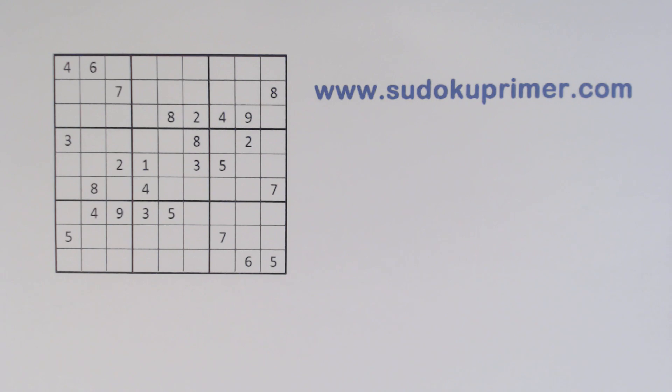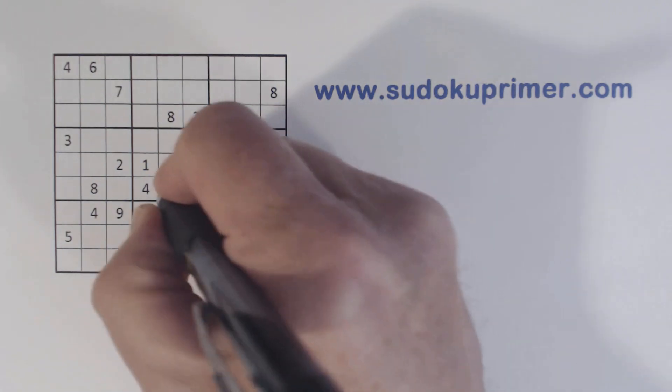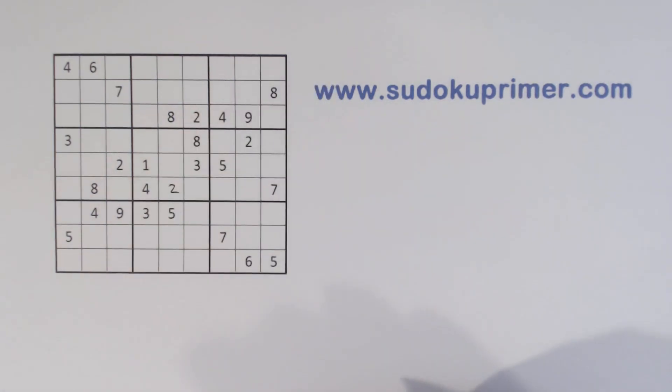This puzzle was kind of fun to do. We're gonna have to use some techniques like double row elimination, twins and triplets, and a few others in order to solve it. So let's get going on it. As I've mentioned before, if you have any questions about how I got a certain number or any questions at all, please leave a comment and I'll try and answer your questions.